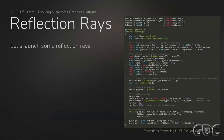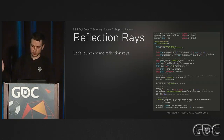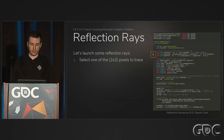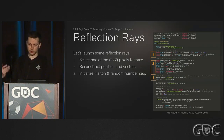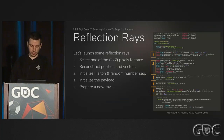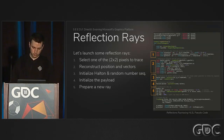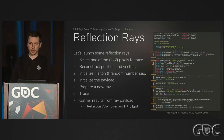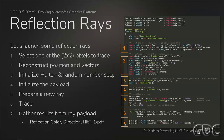Here's a breakdown of how we launch reflection rays with some HLSL pseudocode — don't copy-paste it, it doesn't compile, but it's a simplified reference. First we select one of the two-by-two pixels to trace, reconstruct position and vectors from the G-buffer like direction and normals, then initialize a low-discrepancy Monte Carlo Halton sequence and a random number sequence to rotate it. We initialize a payload, prepare a ray with origin and direction set from the material, trace it, and gather results from the payload. For temporal filtering, we gather not just reflection color but also the ray direction, ray length, and one over the PDF.